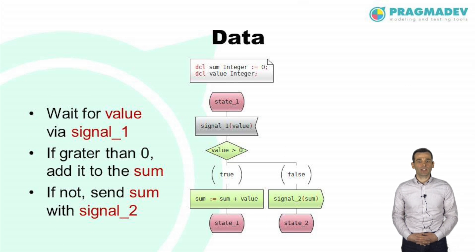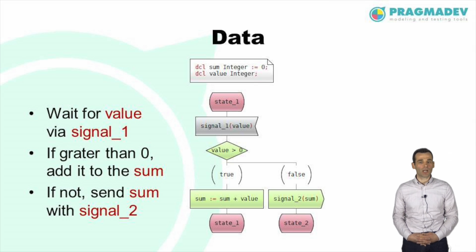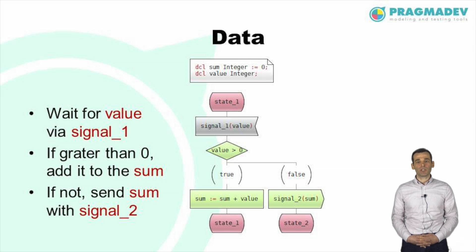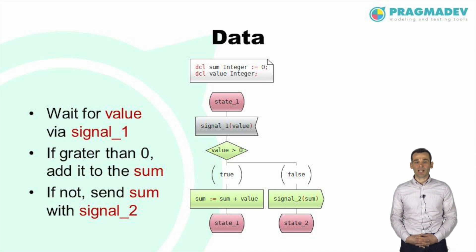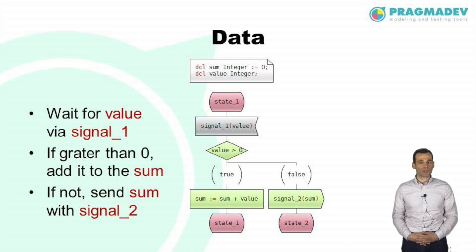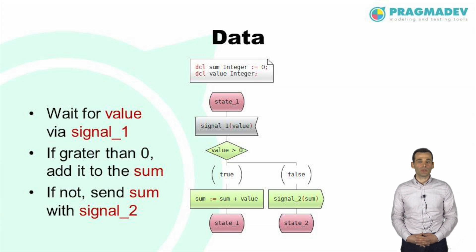Data can be sent and received via message parameters and manipulated inside transitions. In this example, the process is waiting in state 1 for signal 1, whose only parameter is an integer. When the message is treated, its parameter will be copied to the variable named value. A decision is made based on whether the value is greater than 0. If it is, then the value is added to the sum and the process stays in its current state. The process will keep waiting for integers to add to the sum until it receives a 0 or negative value, at which point it will send signal 2 with the computed sum as a parameter.